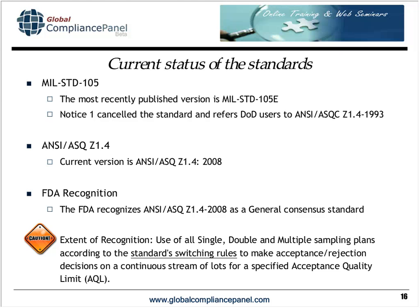For those coming from the medical device field, it's important to understand how FDA views this standard. FDA uses a technique called recognition for general consensus standards, and they recognize ANSI ASQ Z1.4 2008 as a general consensus standard. The extent of recognition is the use of all single, double, and multiple sampling plans according to the standard switching rules. FDA expects you to implement the switching rules, and implementing them provides a lot of value while also reducing your cost of sampling. Z1.4 makes decisions on a continuous stream of lots for a specified acceptance quality limit, or AQL.